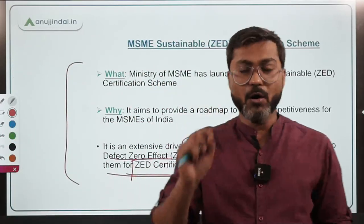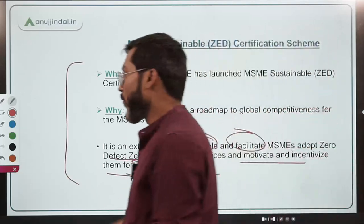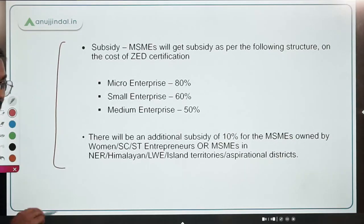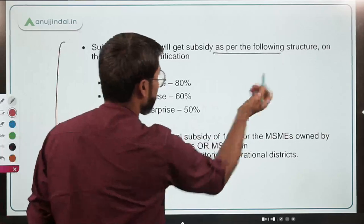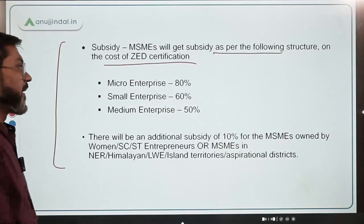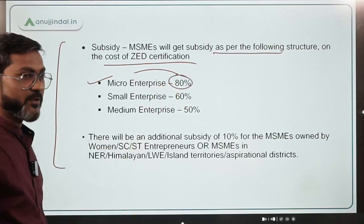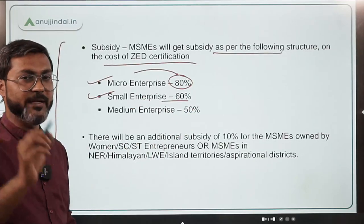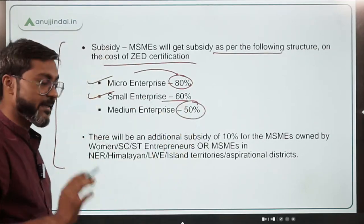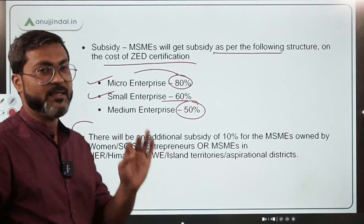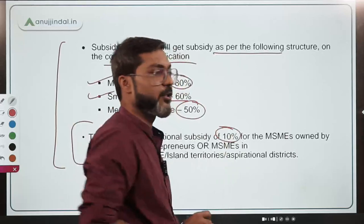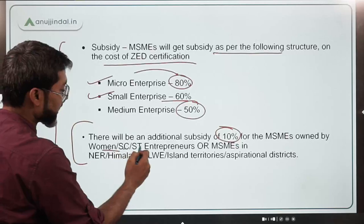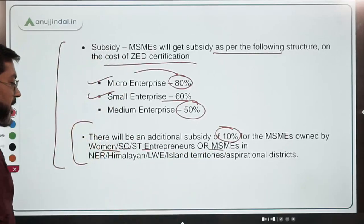The government has defined the subsidy structure: Micro enterprises will get 80% subsidy on the cost of Z Certification, small enterprises will get 60%, while medium enterprises will get 50% subsidy. Additionally, there will be an extra 10% subsidy for MSMEs owned by women, SC or ST entrepreneurs, or MSMEs located in the northeastern region.